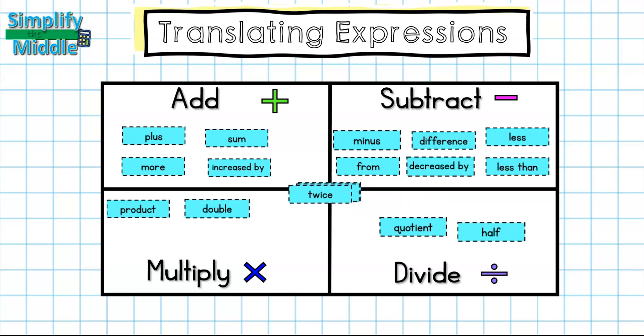Twice also means multiply by two, by is a multiplication word, times is a multiplication word, and triple means to multiply by three.